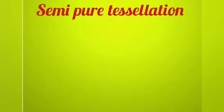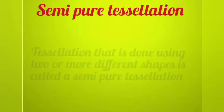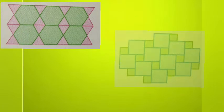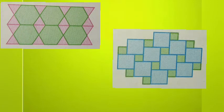What is a semi-pure tessellation? A tessellation that is done using two or more different shapes is called a semi-pure tessellation. These are some semi-pure tessellations that we can create.